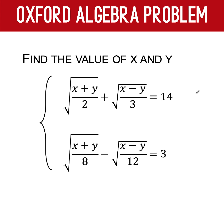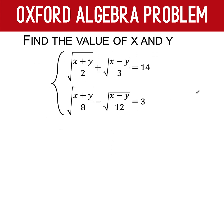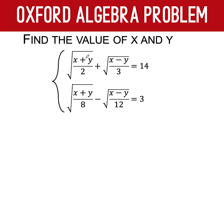You can pause the video and see if you can solve this Oxford algebra problem. Now, let's solve this problem together. When you are solving for a radical equation, the first thing that you are looking at is the presence of perfect squares in the radicand. Notice that in the second equation, this 8 can be expressed as 4 times 2 and 4 is a perfect square. Similarly, this 12 can be written as 4 times 3 and 4 is also a perfect square.